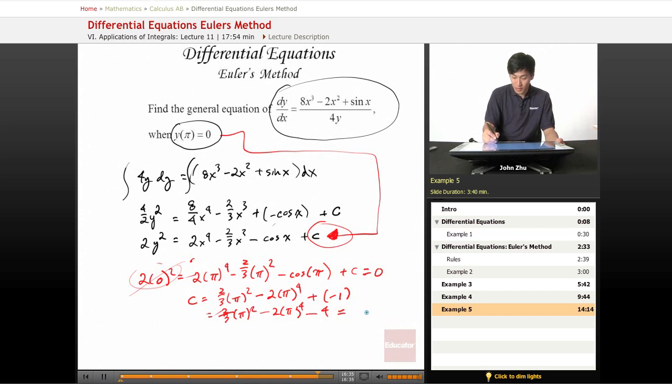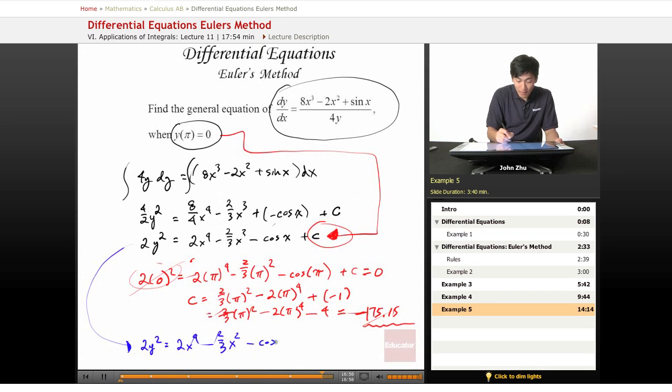And if we solve for this, we'll get something like negative 175.15. And our general equation will become, bringing this down here, 2y squared equals 2x to the fourth minus 2 thirds x squared minus cosine of x minus 175.15. And there is our general equation.